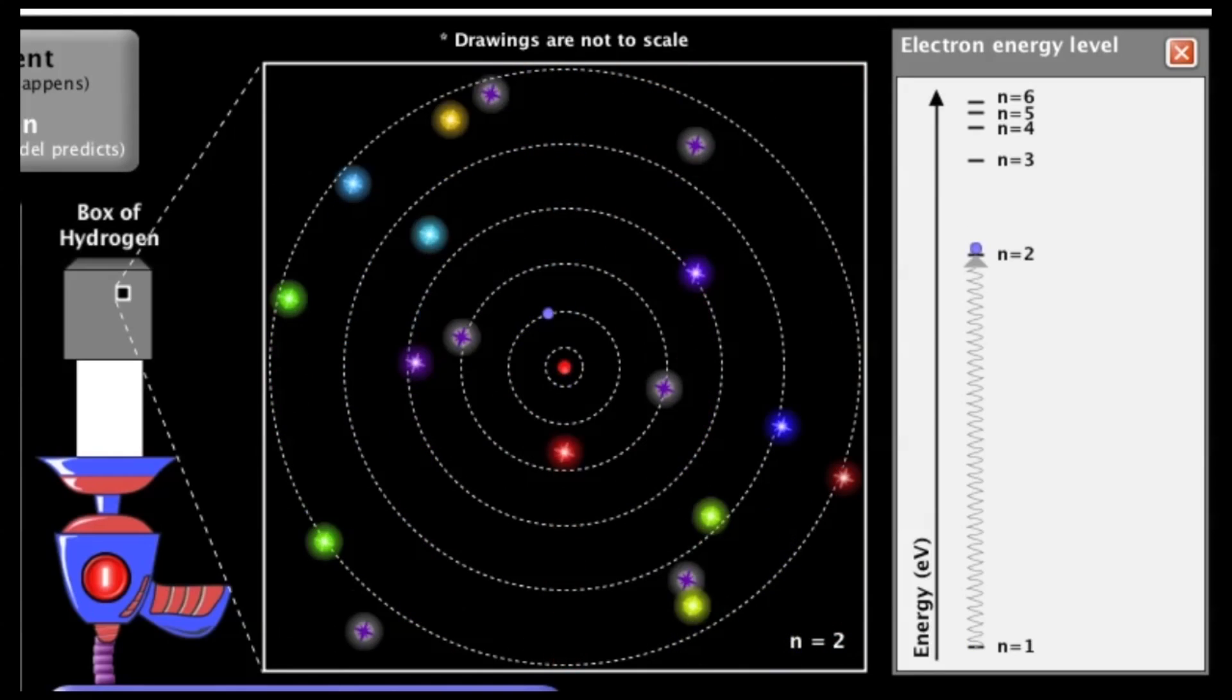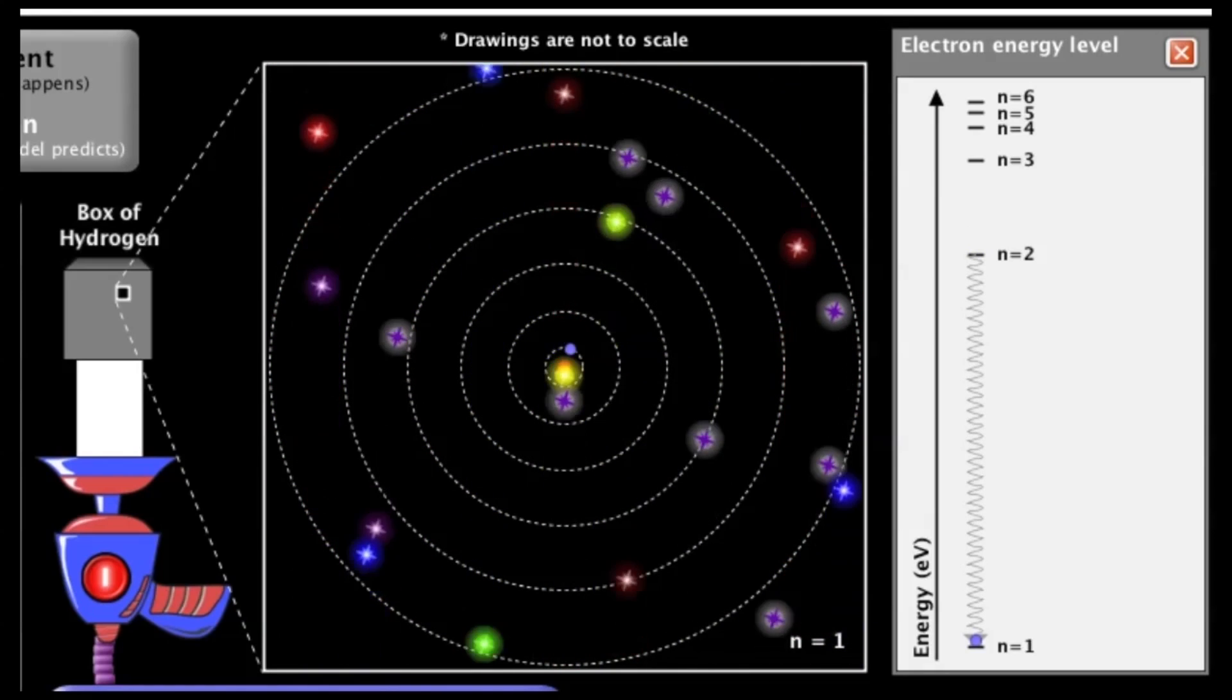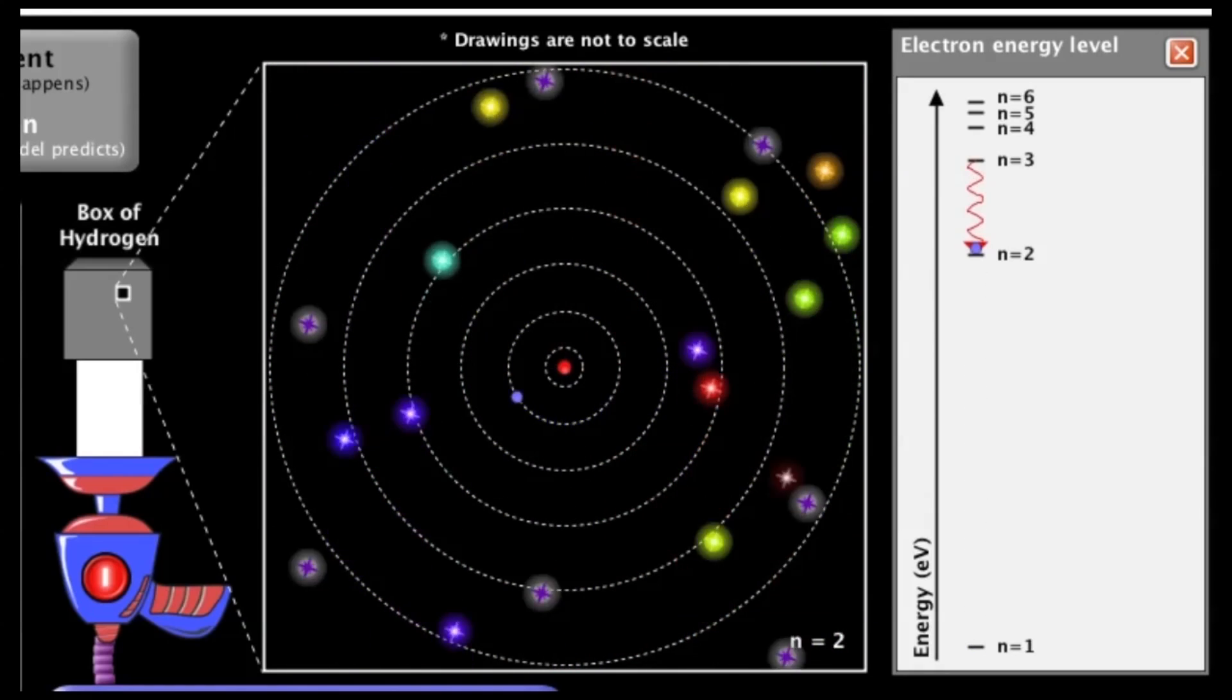Over on the right, you can see the energy changes, electron excited, comes back down and gives off another photon.